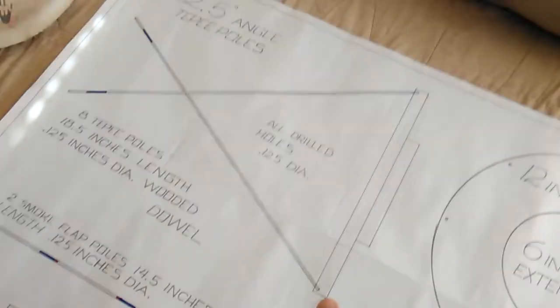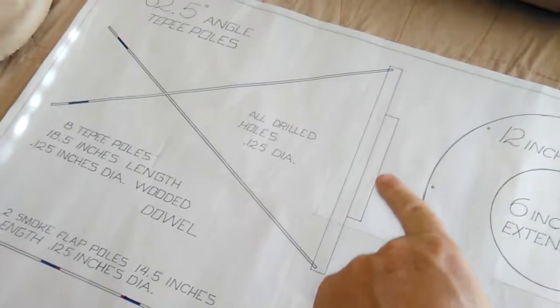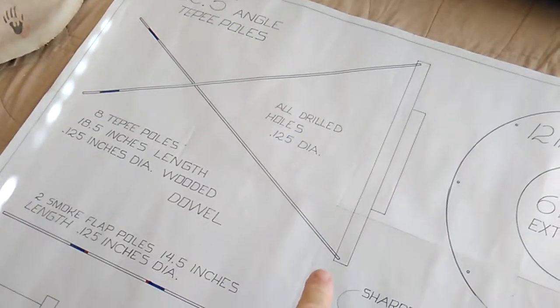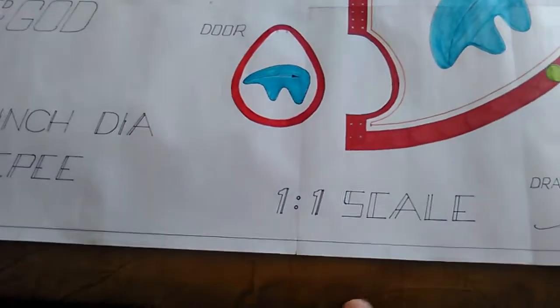And then this is the base and this right here is a pedestal that goes on the bottom. You can see right here is a side view of the base and you see the pedestal. Here you can see the poles and this is to a one to one scale.